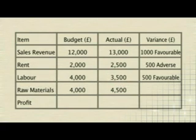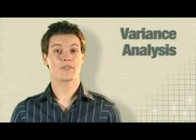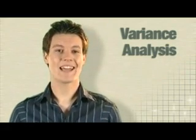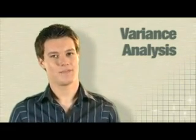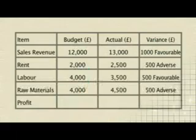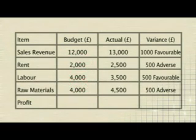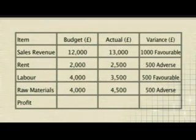And for raw materials, the variance is £500 adverse, because they were higher than planned. To work out the profit variance, you first need to total the costs and take them away from the revenue — for both the budgeted and actual figures. Budgeted costs of rent, labour, and materials were £10,000. This taken away from the £12,000 revenue gives us a budgeted profit of £2,000.